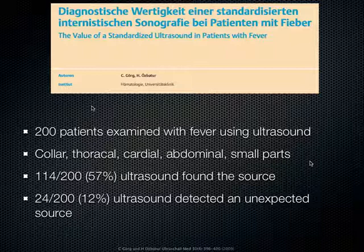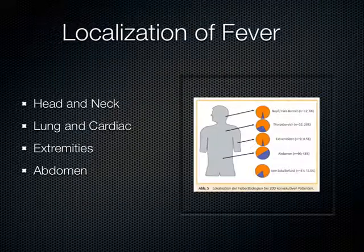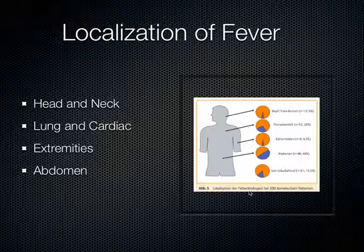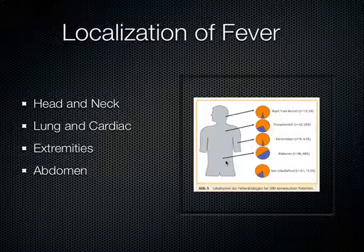They took 200 patients and basically found that 57 percent of the time they were able to find the source using ultrasound, and 12 percent of the time the ultrasound detected an unexpected source they weren't even considering in the workup. This diagram from their article shows that about 12 percent of patients had findings in the head or neck, evidence was found in 26 percent in the chest, almost half the patients had findings in the abdomen, and 15 percent had other findings.